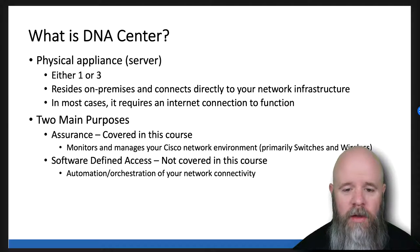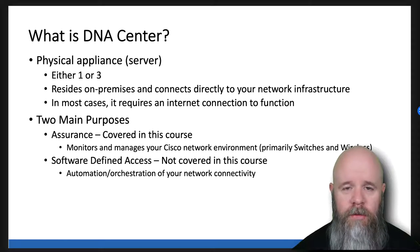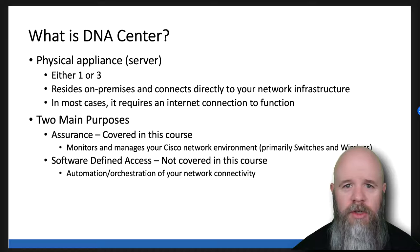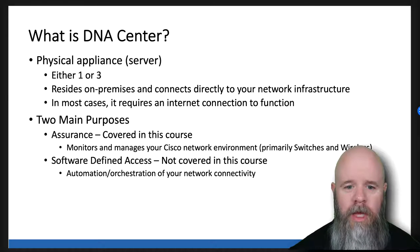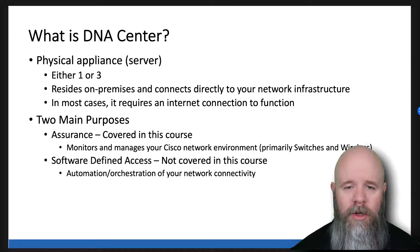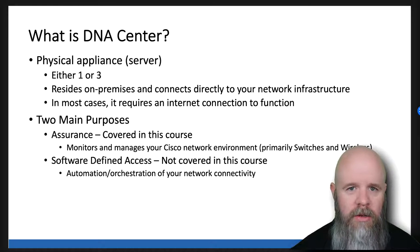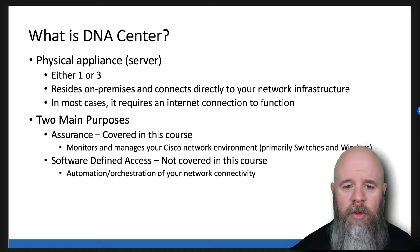By itself, if you only have one server, it's not redundant. That's okay in a lot of cases with DNA Assurance, if you're only doing Assurance, because Assurance is not a service-impacting service. It's like Prime Infrastructure was - an overlay, a management and monitoring solution for your infrastructure. If it goes down, your network does not get impacted at all. So in most cases, you don't need redundancy for Assurance, and you can do it with a single server.